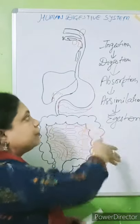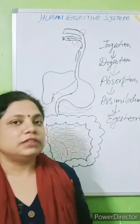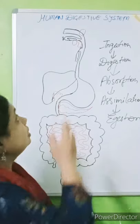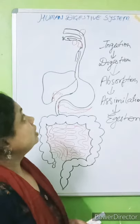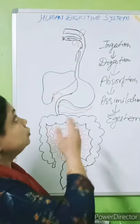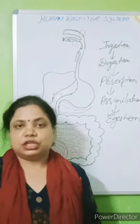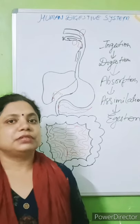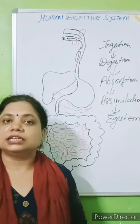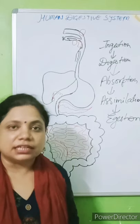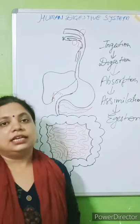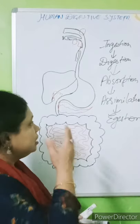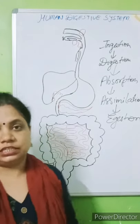These are the five steps involved in the process of nutrition. Now let's start the nutrition which occurs in humans through the human digestive system. In this system, organs are present and all organs together form the alimentary canal, which you can also call the gut.